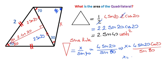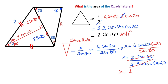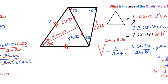Therefore x = 4·sin20 × sin70 / sin80. Since sin70 = cos20, we get x = 4·sin20·cos20 / sin80 = 2·sin40 / (2·sin40·cos40), which simplifies to x = 1 / cos40.